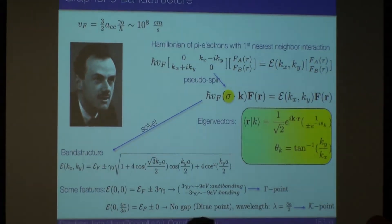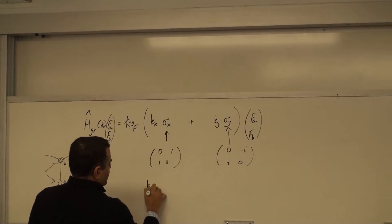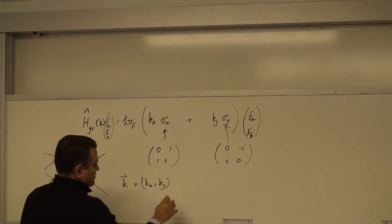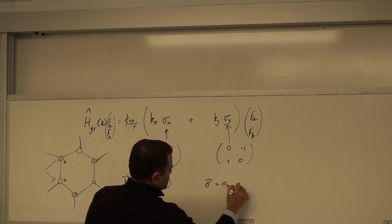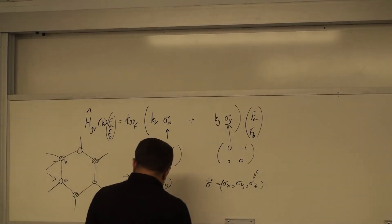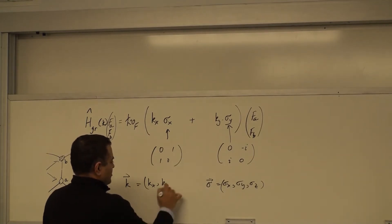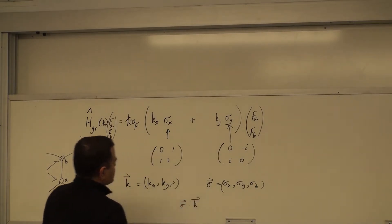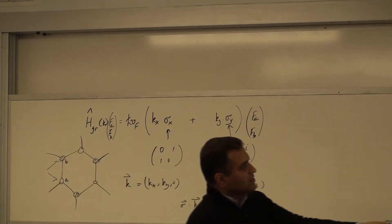Because of that, we can write the Hamiltonian in terms of Pauli matrices. We can compose K_x and K_y into a 2D K vector, and σ as (σ_x, σ_y, σ_z). The K_z component here doesn't have to be zero — you can leave it. So σ·K is just the Hamiltonian, because that's just K_x times σ_x plus K_y times σ_y.